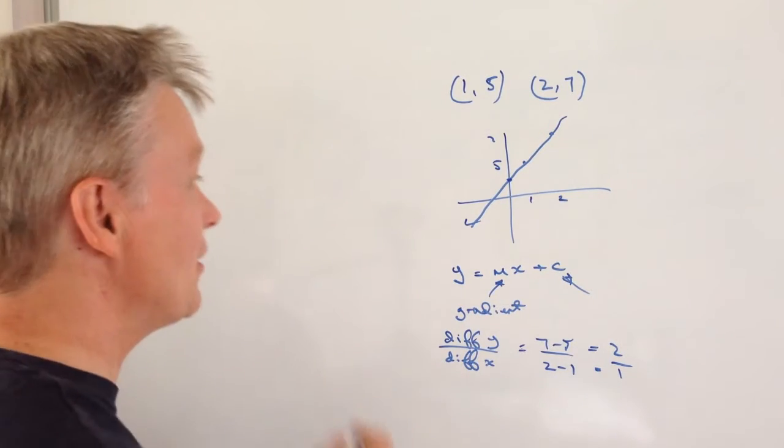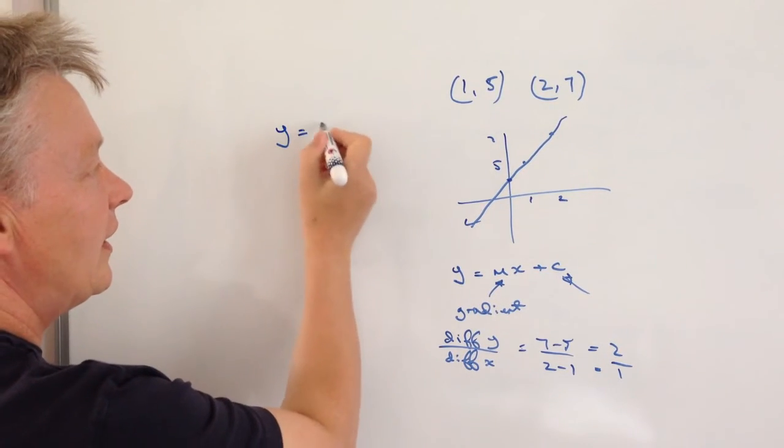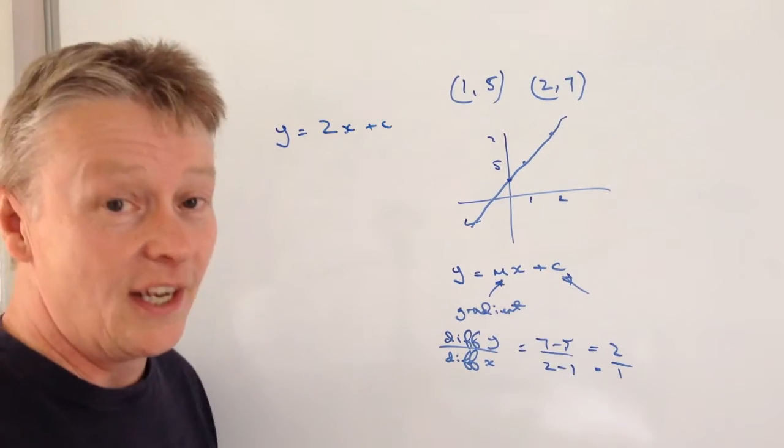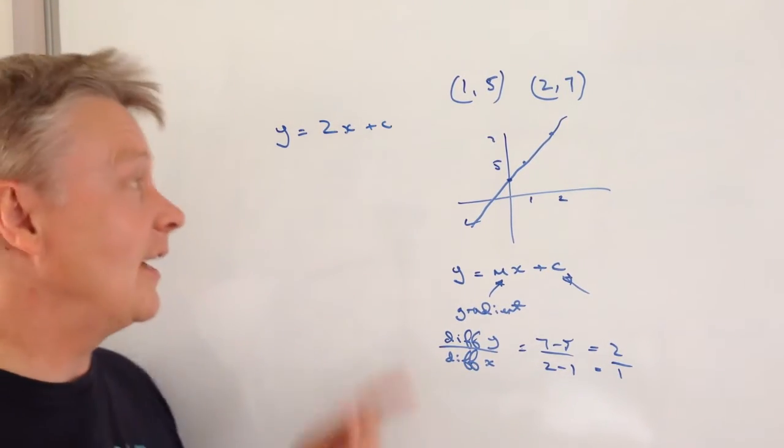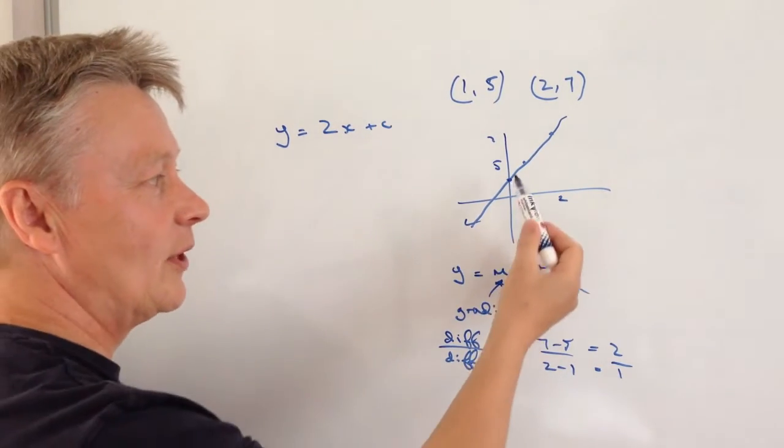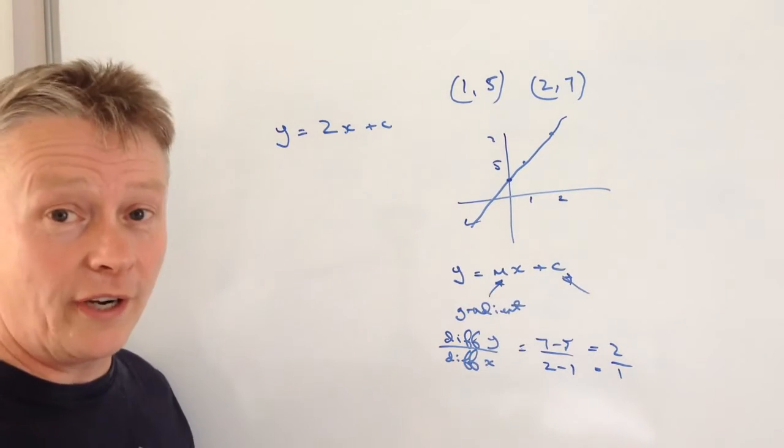So I can kind of start to write this out now as y equals 2x plus c. Now the only thing I've got left to find out is this value of c. In other words, this intercept where it actually crosses.